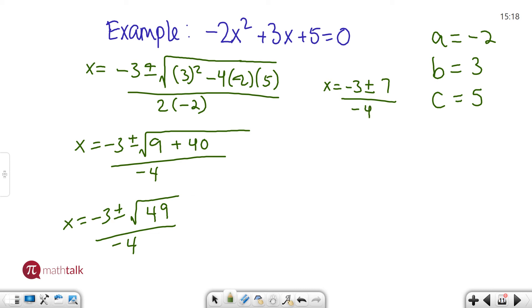So again, we have our part where we split up into two different solutions. x equals negative 3 plus 7 over negative 4. And x equals negative 3 minus 7 over negative 4. So let's look at the top one. Negative 3 plus 7 is positive 4. And positive 4 divided by negative 4 is negative 1. On the bottom, negative 3 minus 7 is negative 10. And negative 10 divided by negative 4 is actually you can write it as positive 10 over positive 4. Which will simplify down to 5 over 2 or 5 halves.